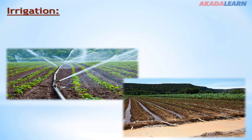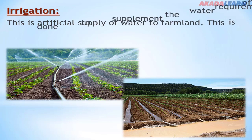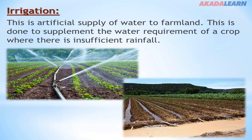Irrigation. Basically, we have two types of irrigation — mechanical and those that can be carried out manually. Irrigation is an artificial supply of water to farmland. This is done to supplement the water requirement of the crop where there is insufficient rainfall. Sometimes irrigation farming is practiced during the dry season in some parts of Nigeria, most especially in the uppermost parts of northern Nigeria.